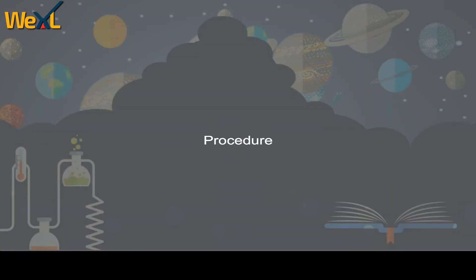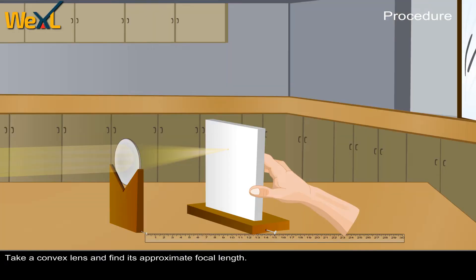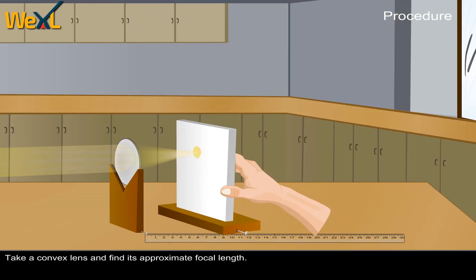Procedure: Take a convex lens and find its approximate focal length.